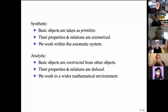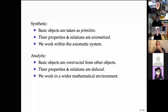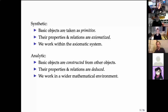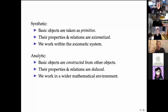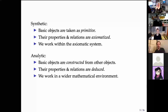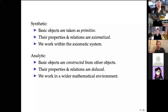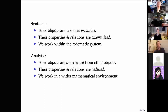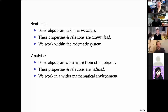In the analytic approach, we construct the basic objects we're interested in. For instance, in Cartesian geometry we view the plane as a Cartesian product of two copies of the real numbers. A point is constructed as a pair of real numbers, and a line is constructed as a certain subset of the plane — certain subsets of ℝ × ℝ are called lines. The properties of these objects are then deduced; we don't add extra axioms on top of the environment we work in.